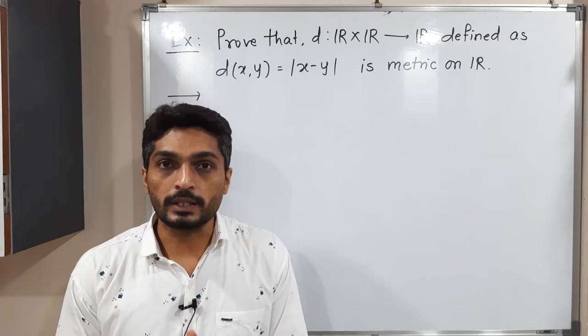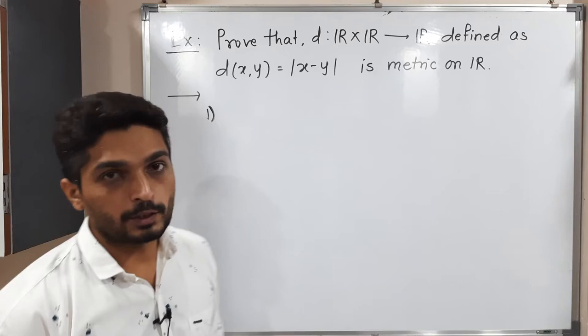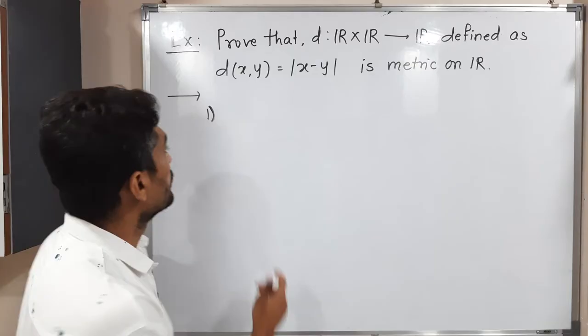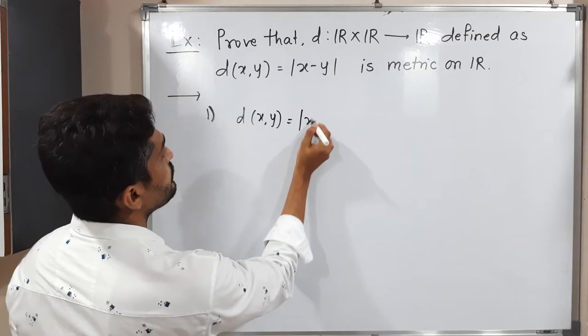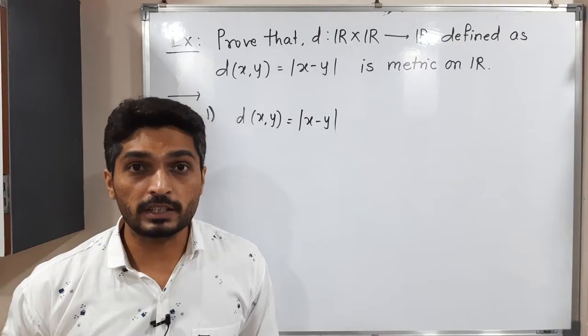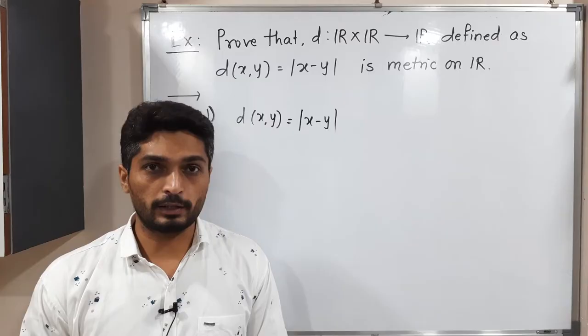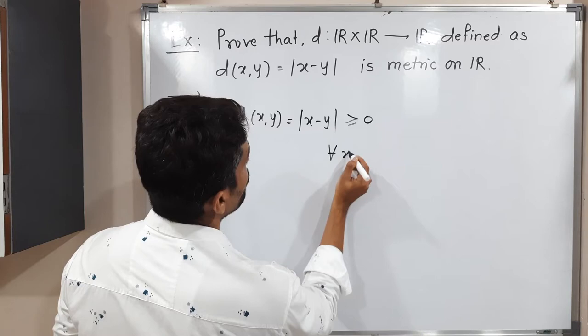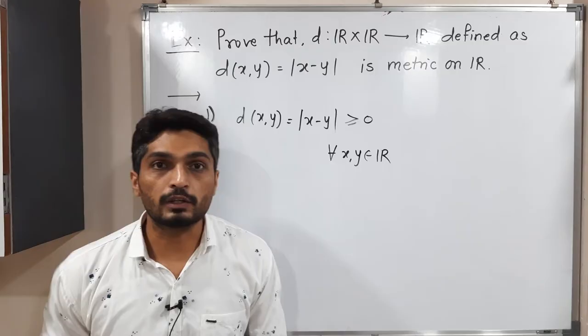The first property is d(x, y) is always greater than or equal to 0. Consider d(x, y) — by definition its value is |x − y|. We know that |a| equals plus or minus a: if positive we get a, if negative we get minus a. So |a| always gives a non-negative value. Therefore d(x, y) ≥ 0 for all x, y in R. The first property is satisfied.